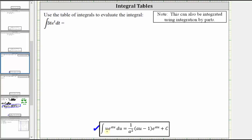where the integral of u times e to the power of au, differential u, is equal to one divided by a squared times the quantity au minus one times e to the power of au plus c.